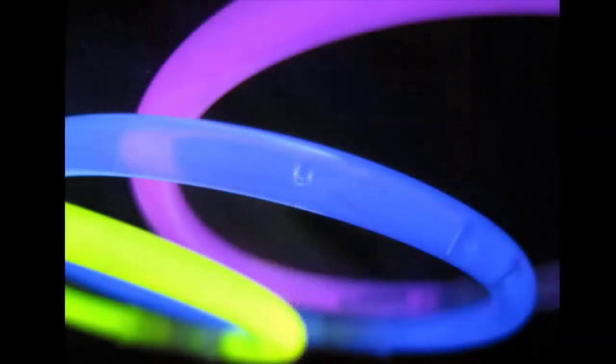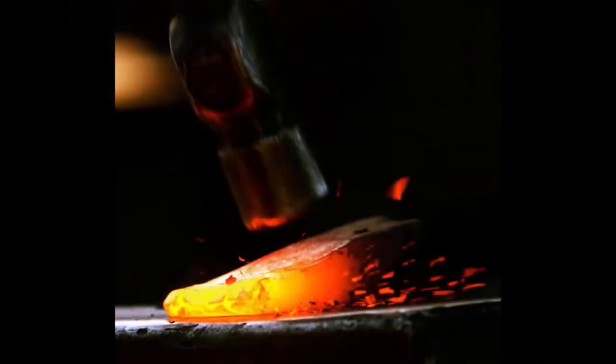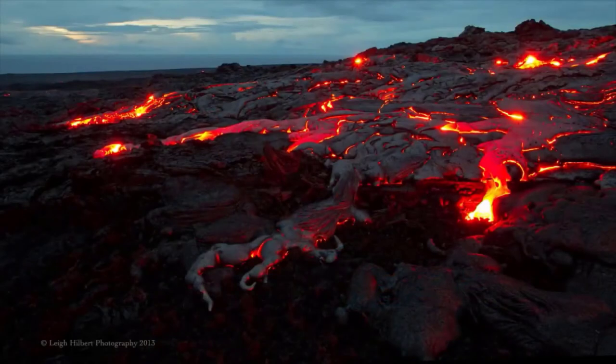Fluorescence, or glow-in-the-dark objects, are also luminous, as well as objects that are heated to high temperatures. Think of hot iron being shaped by a smithy, or lava flow in Hawaii.